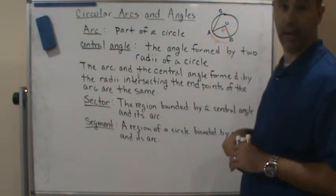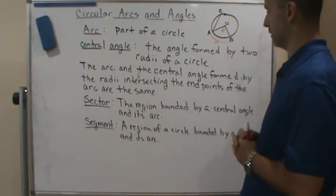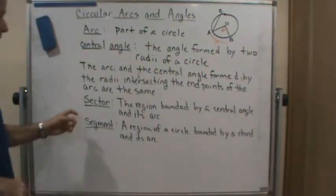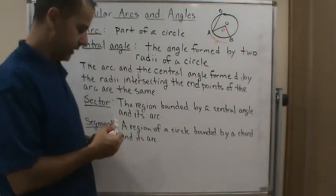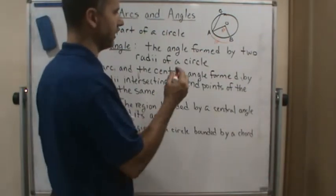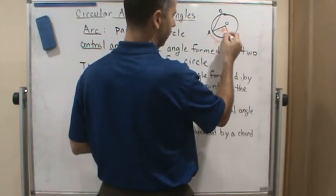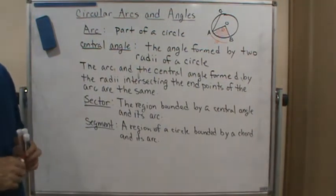The arc is bounded by the central angle, or bounded by the radii of the central angle. Now a sector is the region bounded by the central angle and its arc. For example, in this case here, the sector of this circle would be this region.